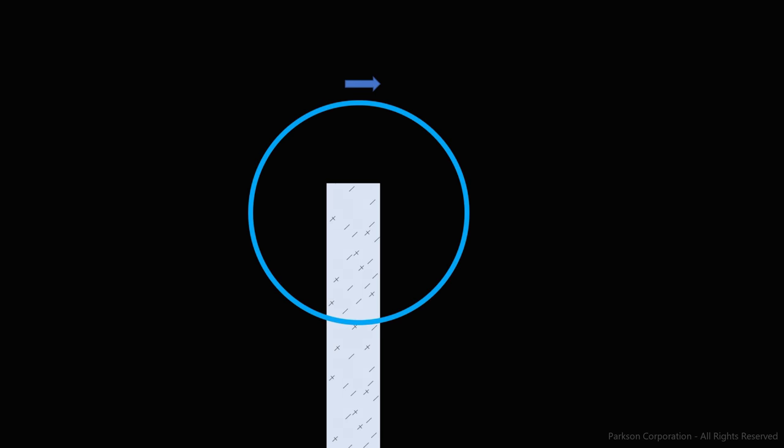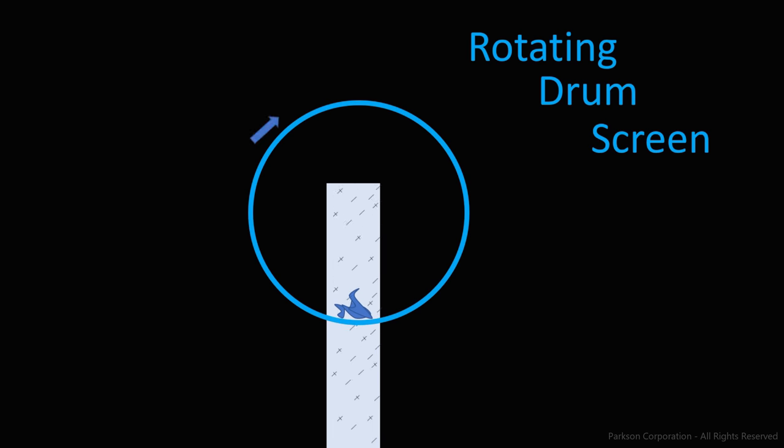The alternative to in-channel screens is to take the incoming flow to the plant and pass it through a rotating drum made up of permeable material, or a screen, known as a rotating drum screen. Still the same concept though. Big stuff stays in, smaller stuff goes out.